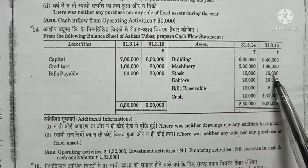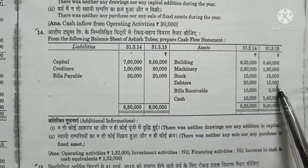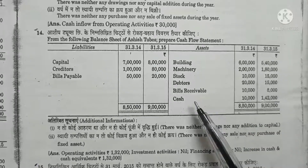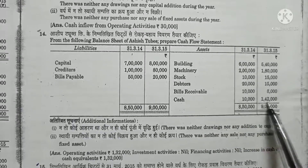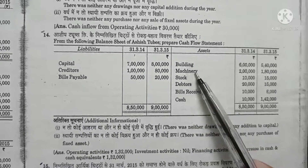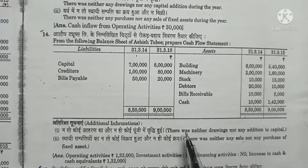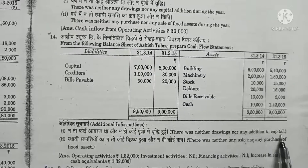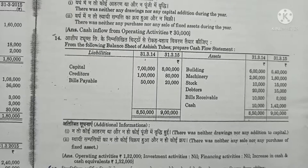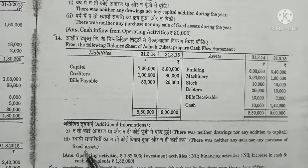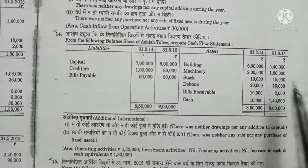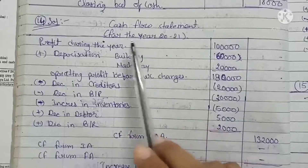Question number 14: From the following balance sheet of Arshis Tube, prepare a cash flow statement. Stock was Rs. 10,000 opening and Rs. 15,000 closing. Debtors were Rs. 20,000 opening and Rs. 15,000 closing. Bills receivable were Rs. 10,000 opening and Rs. 8,000 closing. Cash was Rs. 10,000 opening and Rs. 1,42,000 closing. Inventory, debtors, and bills receivable are current assets; building and machinery are fixed assets. No drawings or capital additions occurred, and no fixed assets were purchased or sold — so the difference in building and machinery represents depreciation.